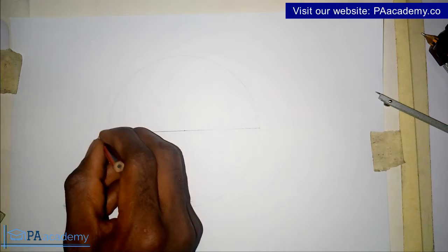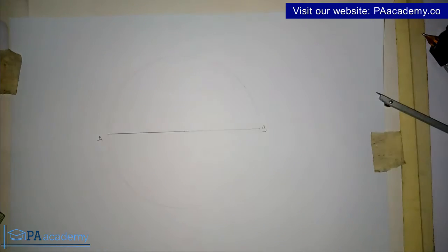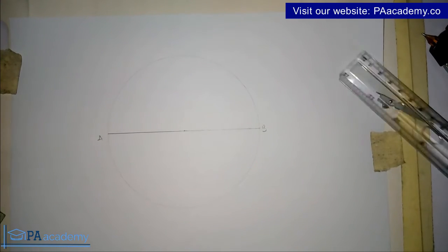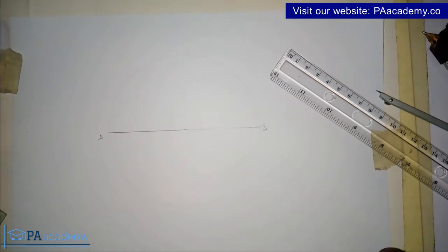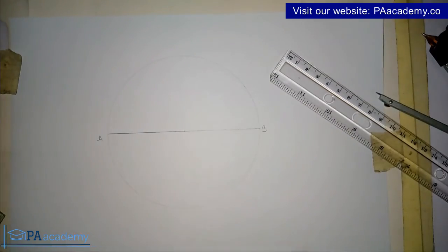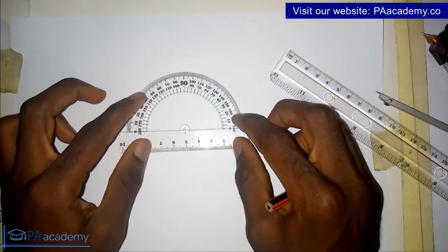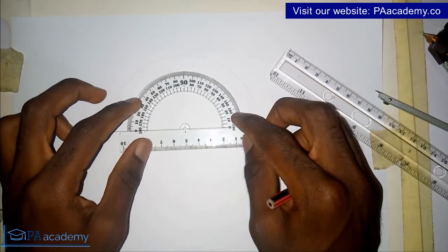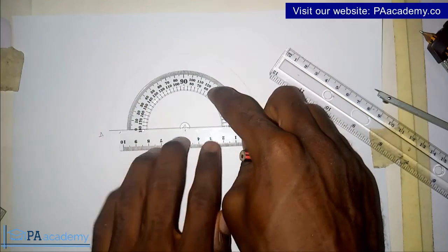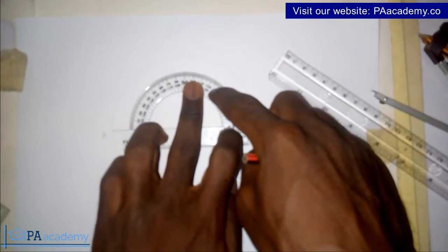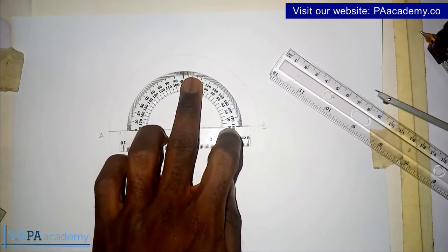So now I have my diameter, let's call it AB. So now let me bring in my protractor. I'll place my protractor, make sure you place your protractor properly on the diameter. So what you do is that at 30 degrees interval, you mark the point at 30 degrees interval.